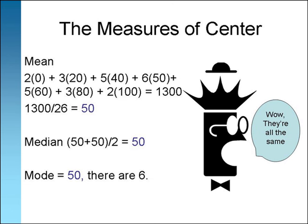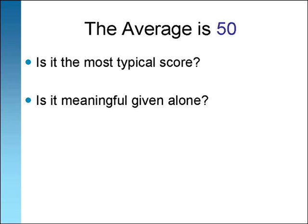The mean, the median, and the mode are all 50. Does that make 50 the most typical score? What does it report when we say that the class average is 50? Is it meaningful given alone?